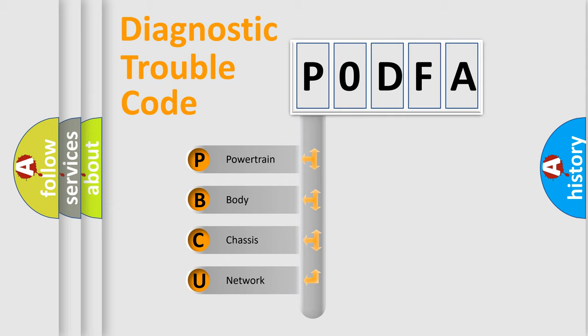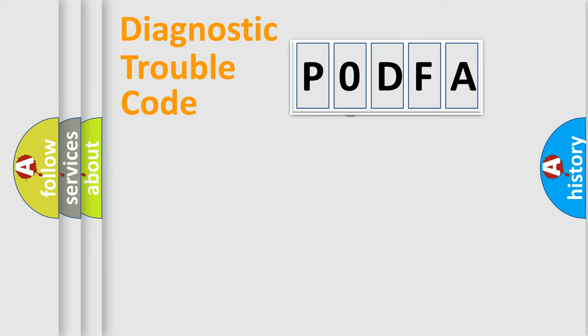We divide the electric system of the automobile into four basic units: Powertrain, Body, Chassis, and Network. This distribution is defined in the first character code.